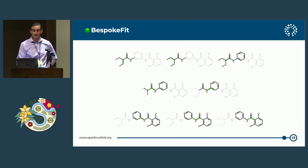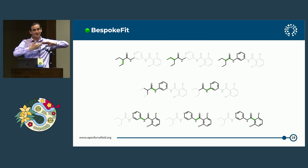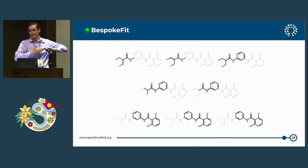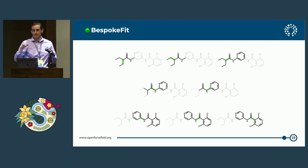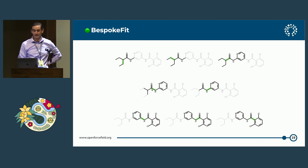Bespoke Fit is really clever. When you give it a big molecule, it recognizes that doing rotations about each torsion of the whole molecule would take an eon to finish, because QM is expensive. So it knows how to chunk down the molecule into electronically decoupled fragments and then just does the torsion drives on those fragments. Here's a single input molecule showing what the fragments would be when it gets chunked out and highlighting the torsions that would be driven in each one.